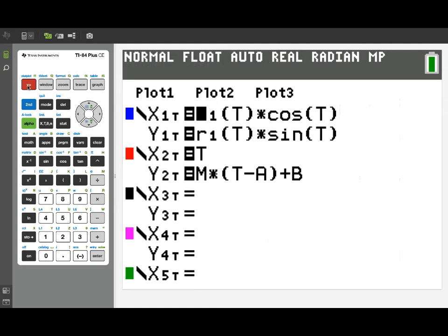Once we have that, here are a couple of formulas I've already entered. Notice that the X1 and Y1 are simply the conversion formulas for polar to parametric. X1t is R1 of t times cosine t. Y1t is R1 of t times sine of t. In X2 and Y2 I've set up a parametric form for a line. M is going to be the slope. A and B are the X and Y coordinates of the point of tangency.